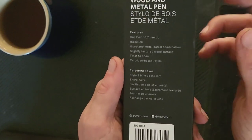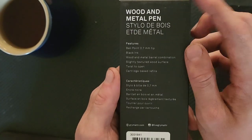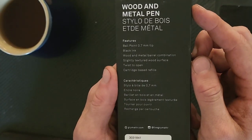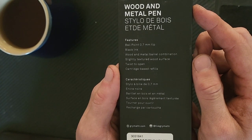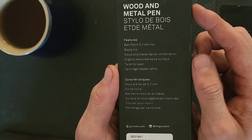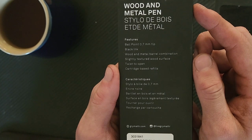First let's take a quick look at the packaging. Wooden metal pen, it has all the writing in English and then French, 7mm tip, or 0.7mm tip, ballpoint, black ink, wooden metal barrel combination.